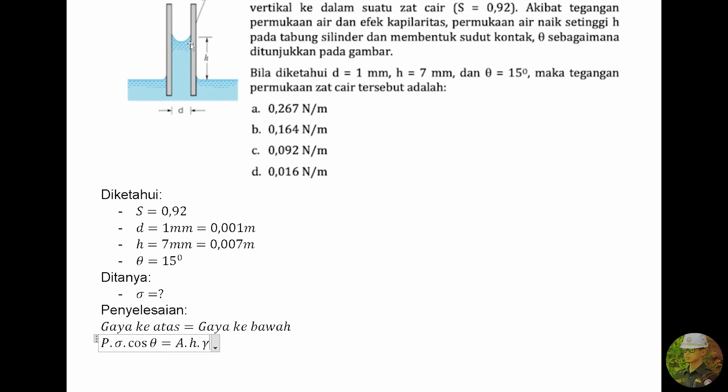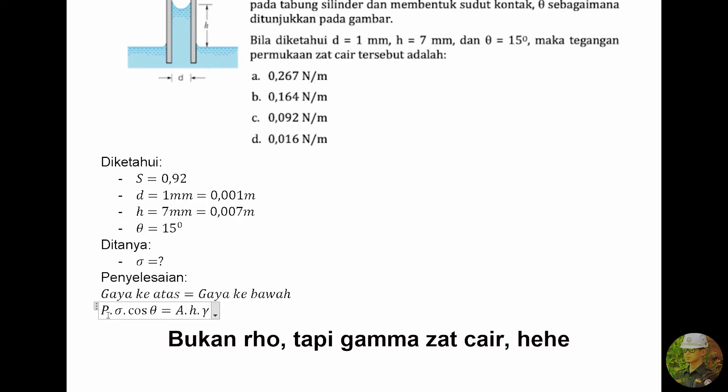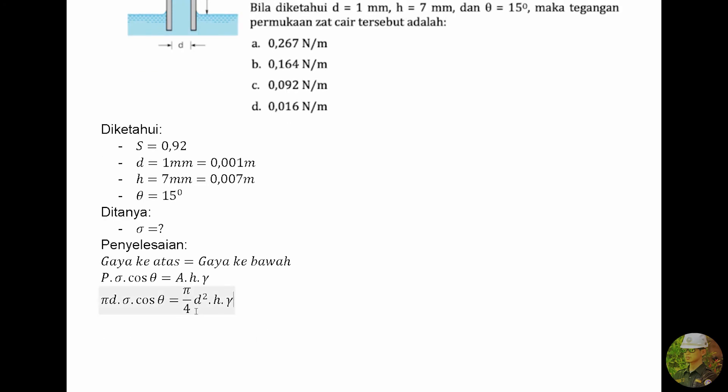Gaya ke bawah dipengaruhi oleh berat kolom zat cair yang terangkat, yaitu A luas penampang silinder ini dikalikan H dan row zat cair. Persamaan ini kalau kita jabarkan maka akan menjadi seperti ini, dimana πD adalah keliling lingkaran, π/4 D² itu adalah luas lingkaran. Disini ada yang bisa dicoret, yaitu π dan D. D nya satu bisa dicoret. Persamaan ini bisa kita sederhanakan lagi. Bagian kanan kita rapikan dulu. Ada D, ada H.